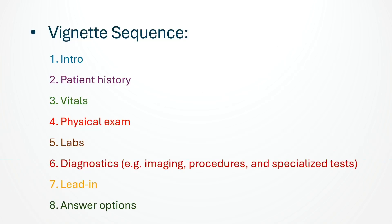Before we dive into strategies, let's first understand the structure of a typical USMLE question. Most vignettes follow a sequence: the intro gives you the patient's age, sex, and main complaint; history adds details about the complaint, past medical history, medications, and family history; vitals, which are usually normal unless relevant; physical exam, which can be normal or may highlight key findings; labs or diagnostics, sometimes present, sometimes not; the lead-in, which is the actual question being asked; and answer options, usually five. Recognizing this sequence helps you quickly organize the information instead of getting lost in the details.